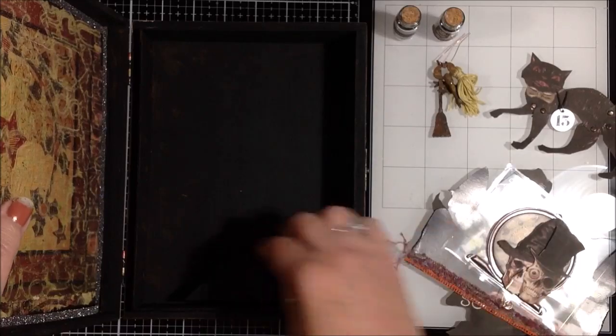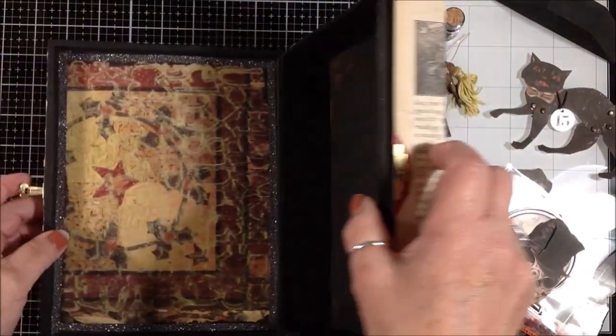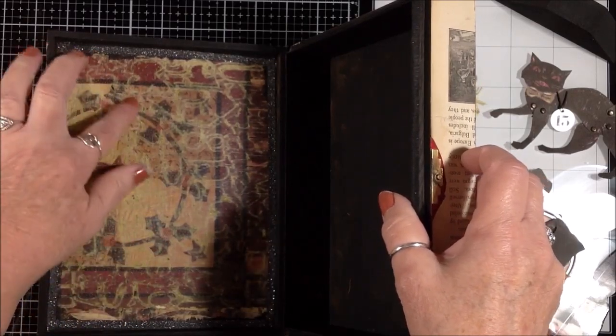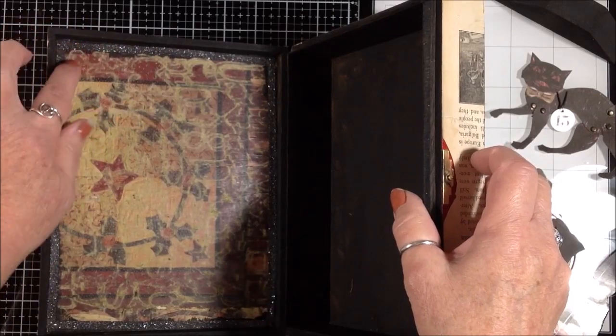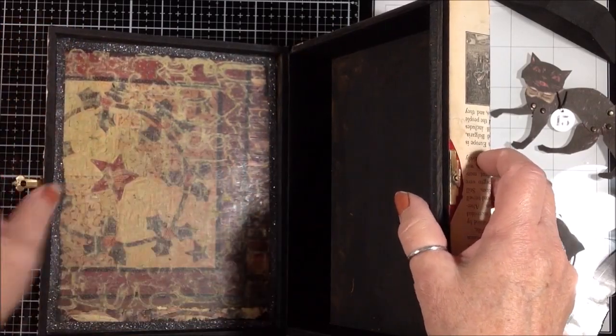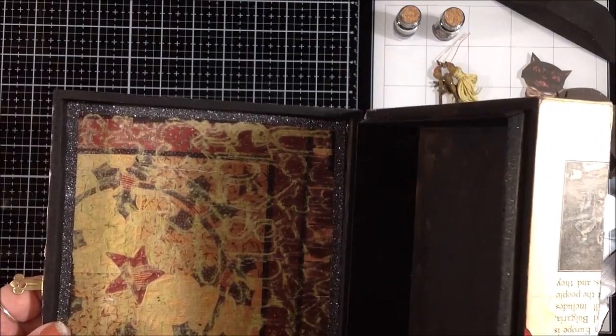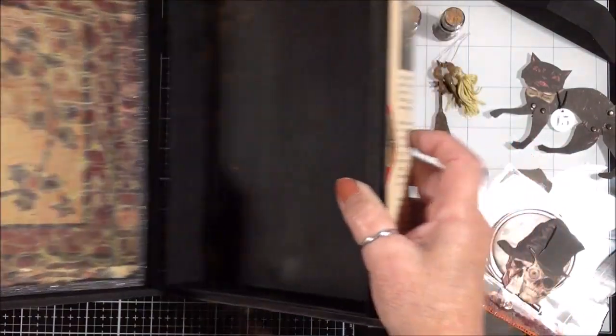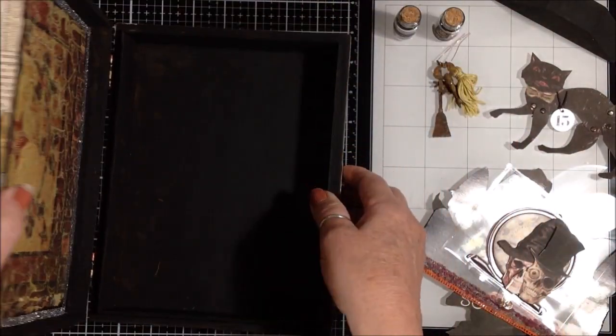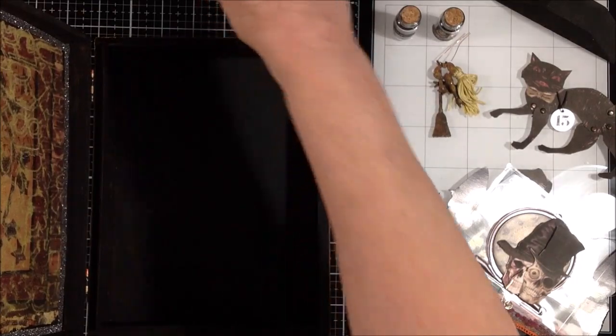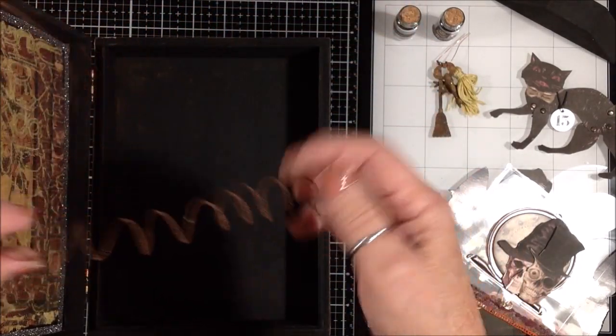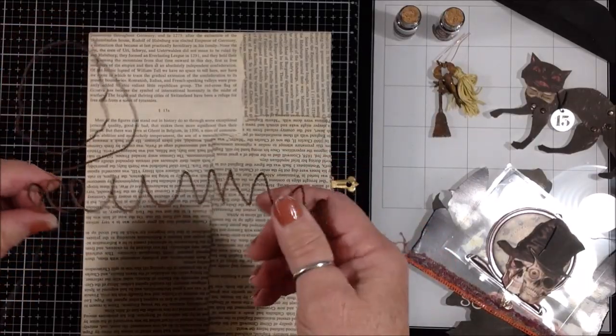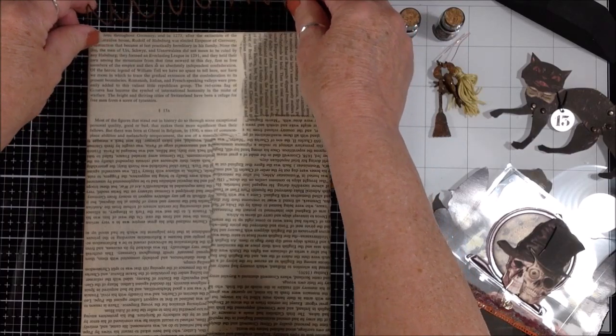I put that black mica in there and then just put some poison labels on those bottles. And then I just have some rusty cheesecloth and some black lace that I just kind of tore and ripped and tattered. So there's that, my black wood.